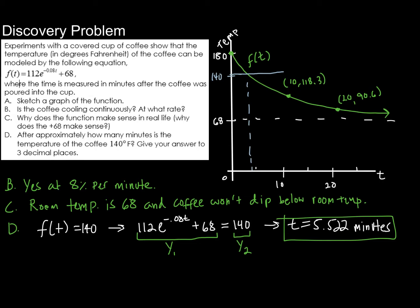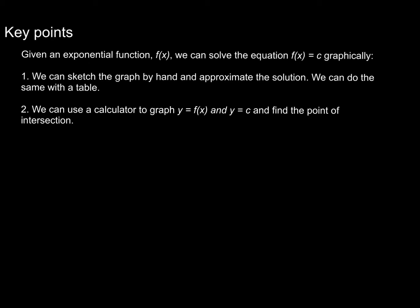Alright, let's go ahead and write down the key pieces of information that we have learned here in this problem. Alright, so if we're given an exponential function, just like any other function, we can solve the equation where we're setting our function equal to some value. In this case, I'm going to call it c, and we can do so graphically. The first way we can do it is we can sketch the graph by hand and approximate the solution. So we can do the same with a table. In other words, we could have made a table of values for our function f of t and tried to see where we would approximately end up at 140. You might have seen that it would be between 5 and 6.